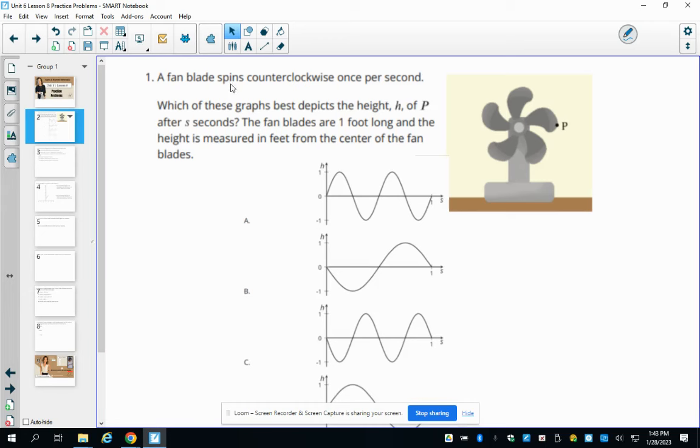Number one says that we have a fan blade that spins counterclockwise once per second. Which of the graphs best depicts the height of P after S seconds? The fan blades are one foot long and the height is measured in feet from the center of the fan blades. So we're looking at this being like a height of zero and then it's going to go counterclockwise. So the height is going, if we go counterclockwise, this is a height of zero. Now we're going up in height.